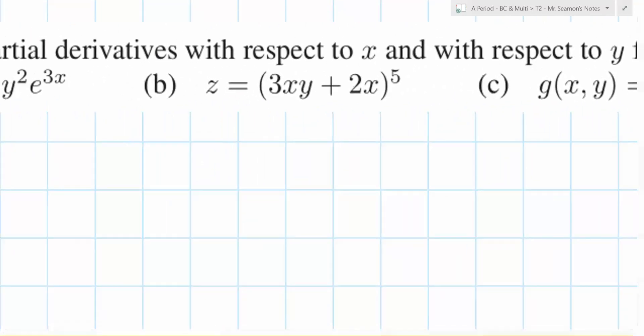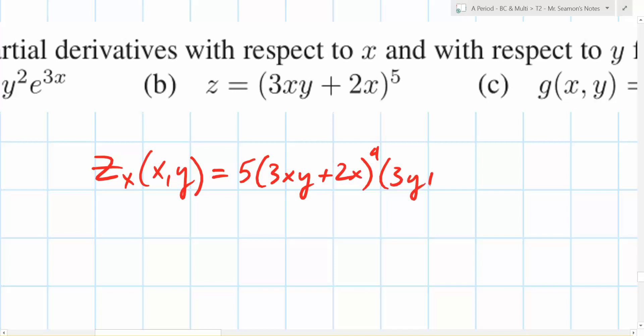Same thing. So zx of xy. x is changing. So what do you drop to the front first? So 5, 3xy plus 2x to the 4th. But what rule are we dealing with right now? What's the overall chain rule? So we have to differentiate the inside with respect to x. So what is it going to be? 3 plus... zy, xy is 5, 3xy plus 2x to the times what? 3x. Anything else? No, because 2x with respect to y when you're differentiating is 0.